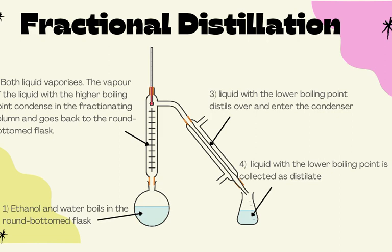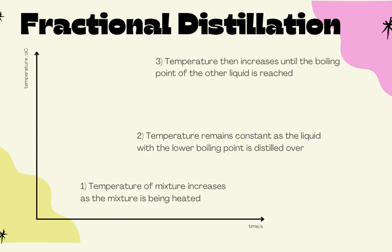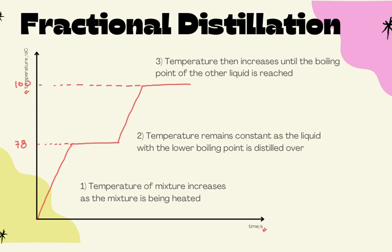The second collection point is when the second liquid's boiling point is reached — you then change your conical flask to collect the second liquid. Looking at the temperature versus time graph: temperature increases until the boiling point of the lower boiling point liquid is reached — in this case ethanol at 78°C. After all the ethanol is distilled over, temperature continues to rise until the next boiling point, water at 100°C.